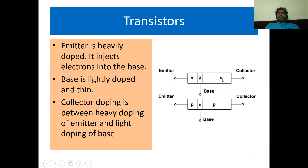Transistors are of two types: NPN transistor and PNP transistor. The emitter is heavily doped. The base is lightly doped and it is very, very thin. The collector is moderately doped and it occupies the largest area compared to the emitter and base.